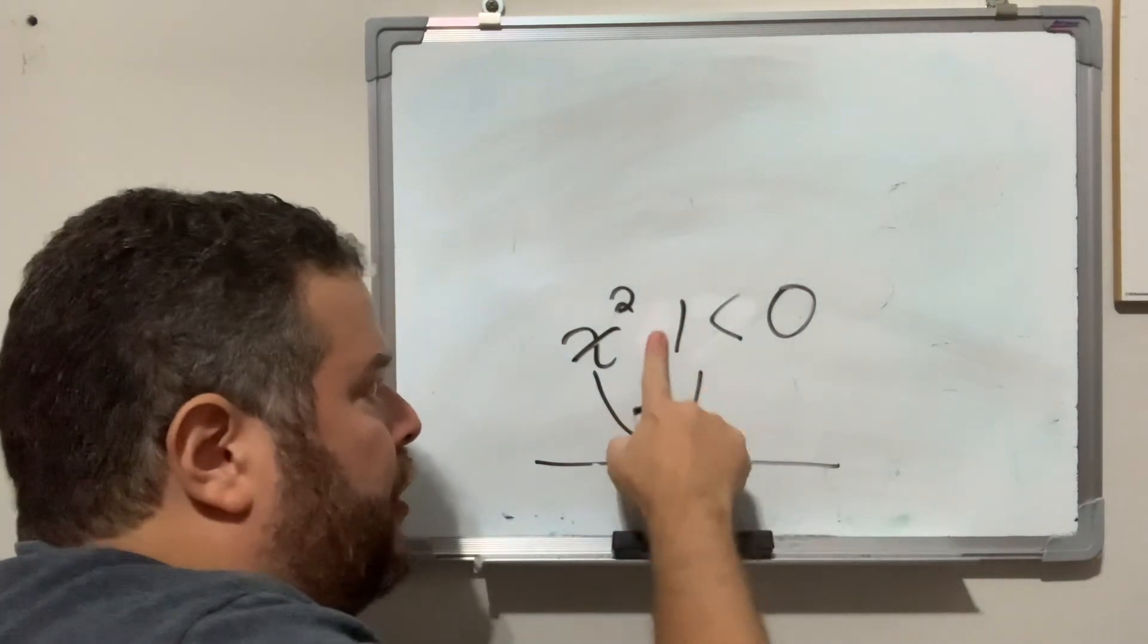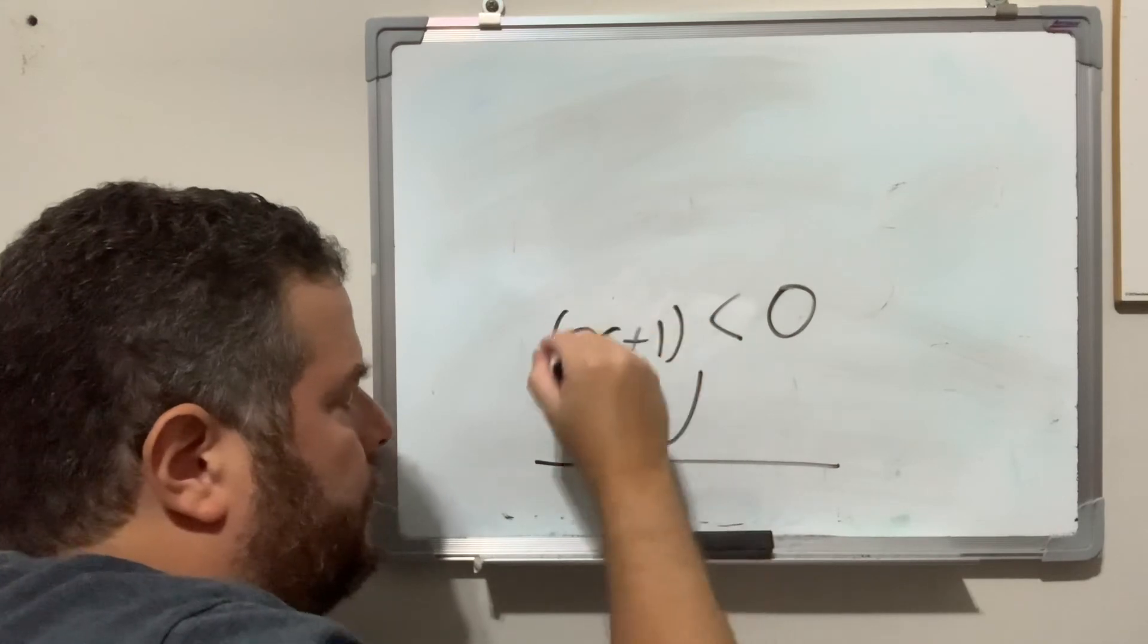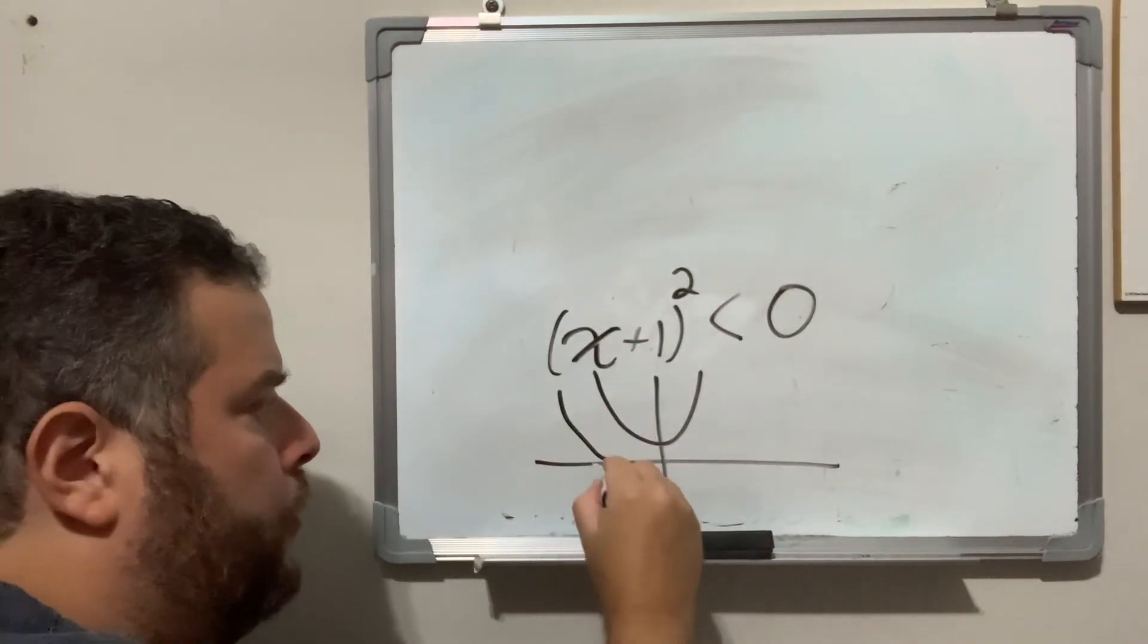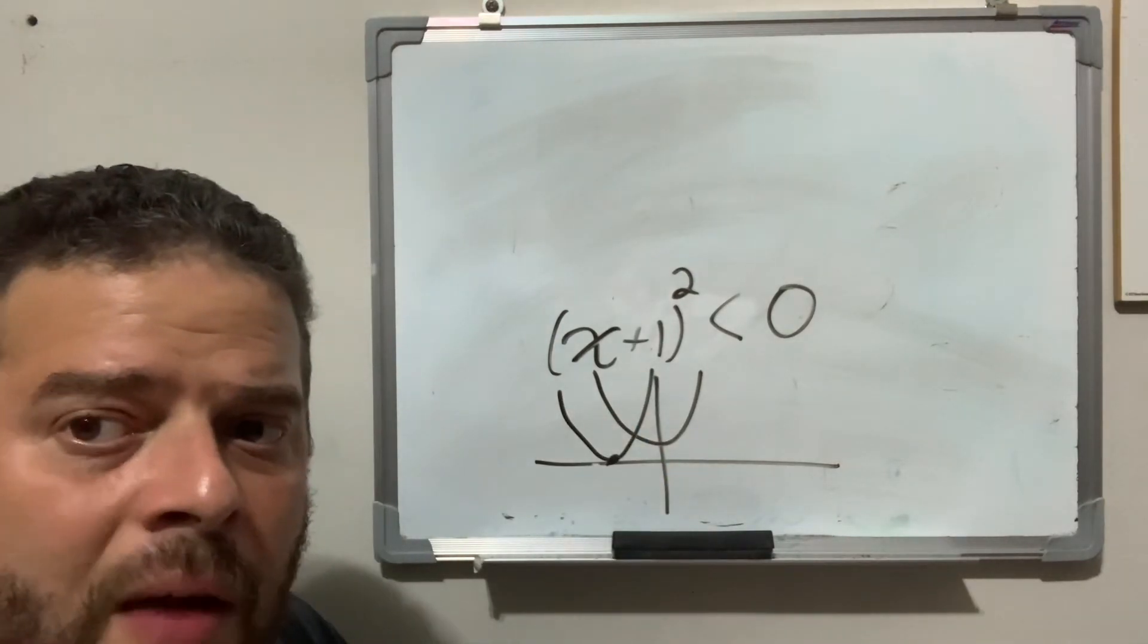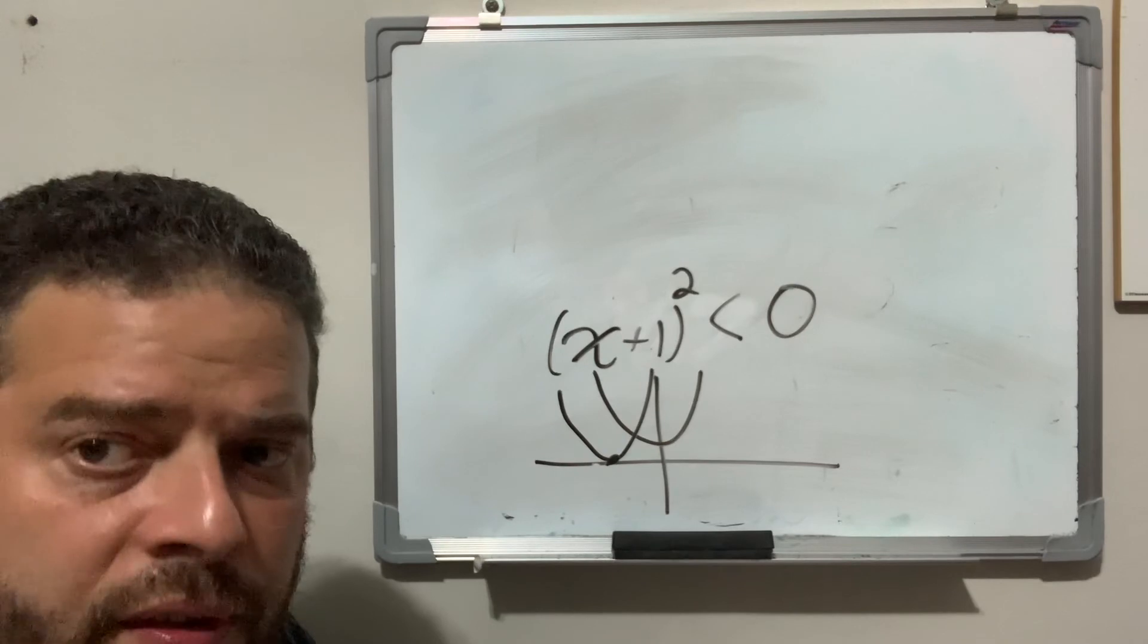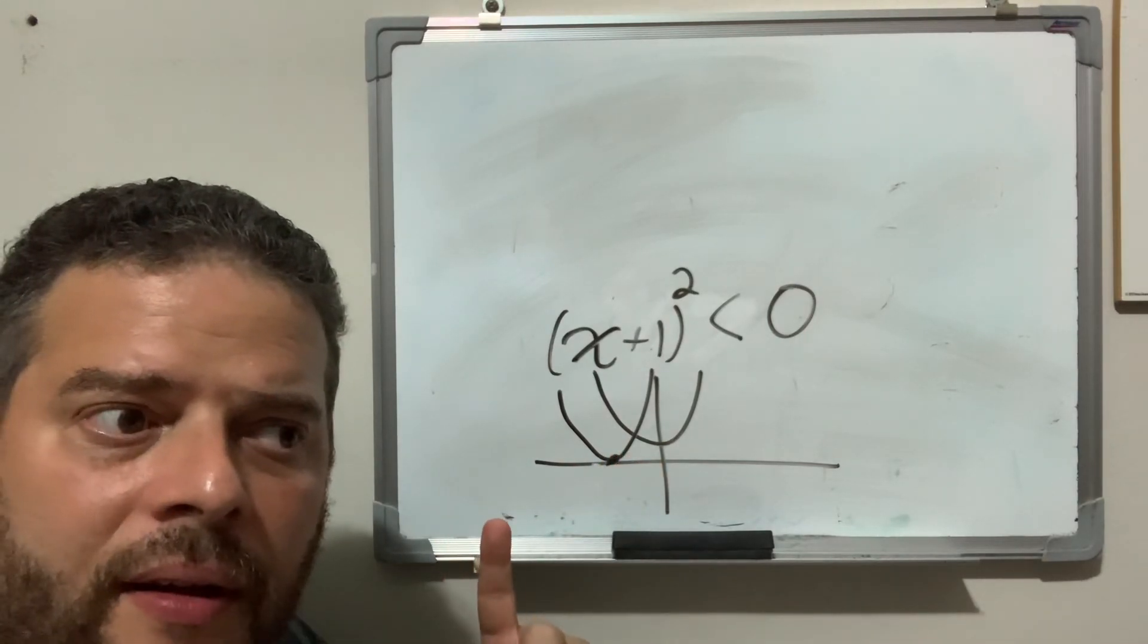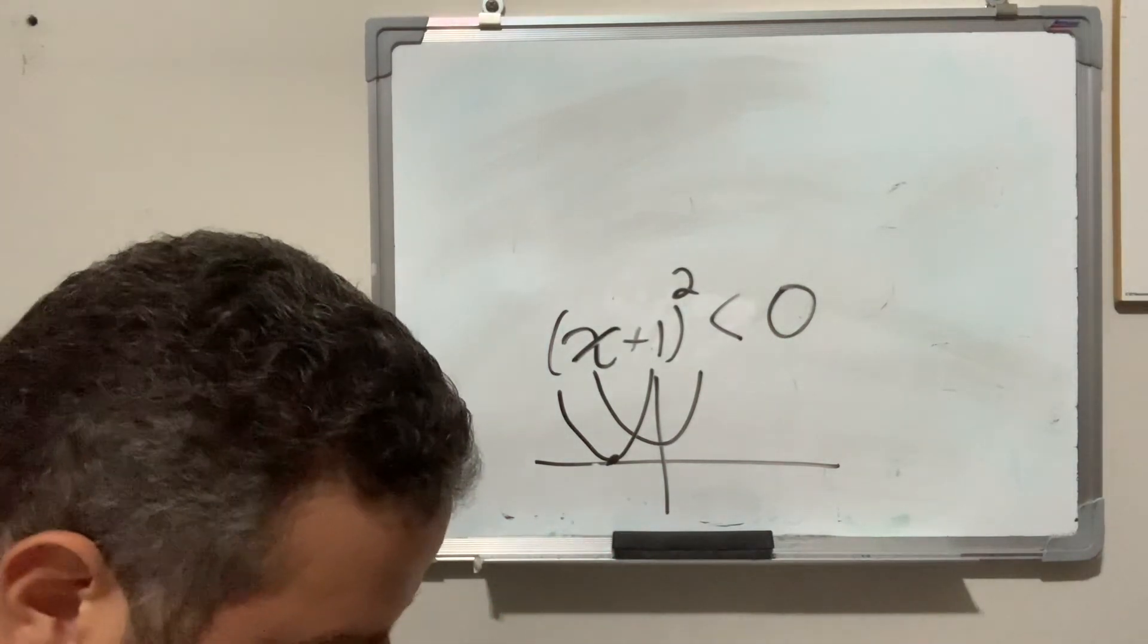And if I were to turn this into this, this would be a quadratic moved one left. It touches the x-axis. That would be a single solution. The same number repeated twice, but it only counts as a solution. It's just a repeat solution.